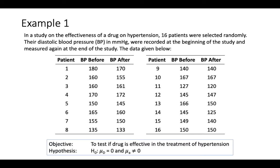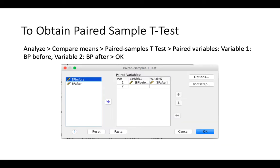My alternative hypothesis would be: there is a significant difference in the BP after consumption of the hypertension drug. That's my alternative hypothesis. How do you obtain a paired sample T? I'm going to show you in SPSS.